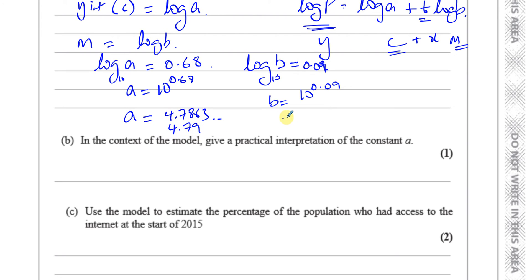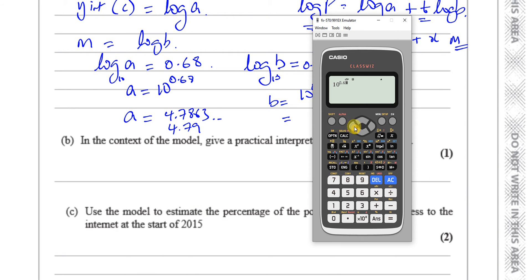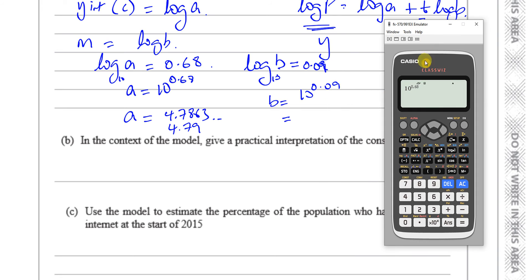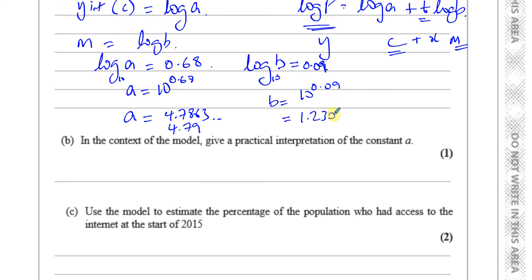And B is equal to 10 to the power of 0.09, which gives us 1.2302, which is 1.23. So that's the value of B, 1.23, and that's the value of A, 4.79.